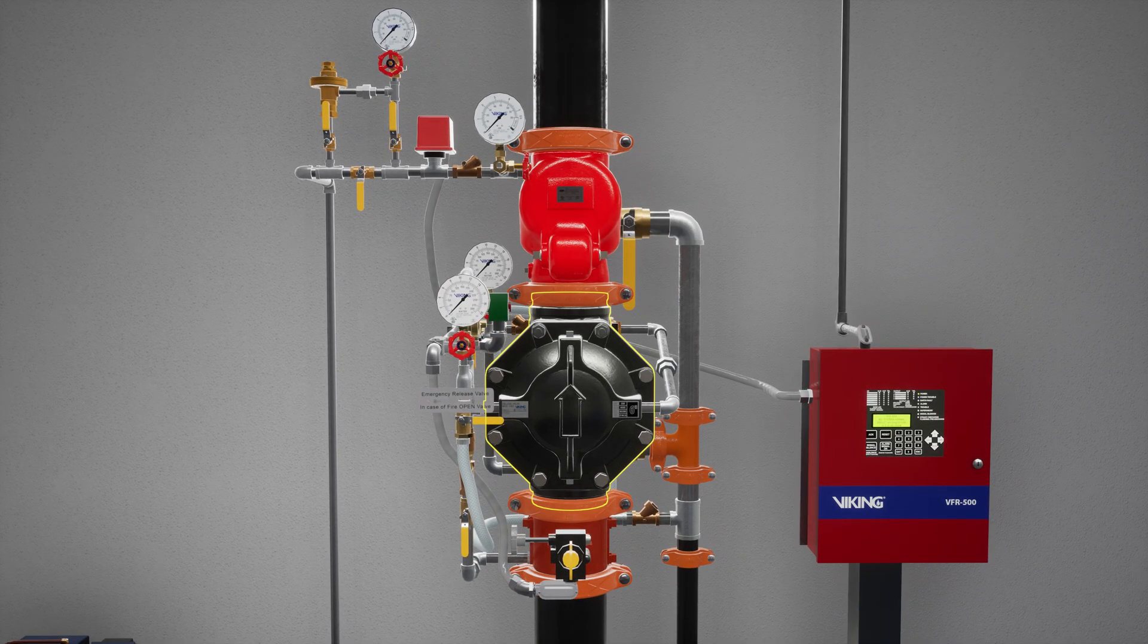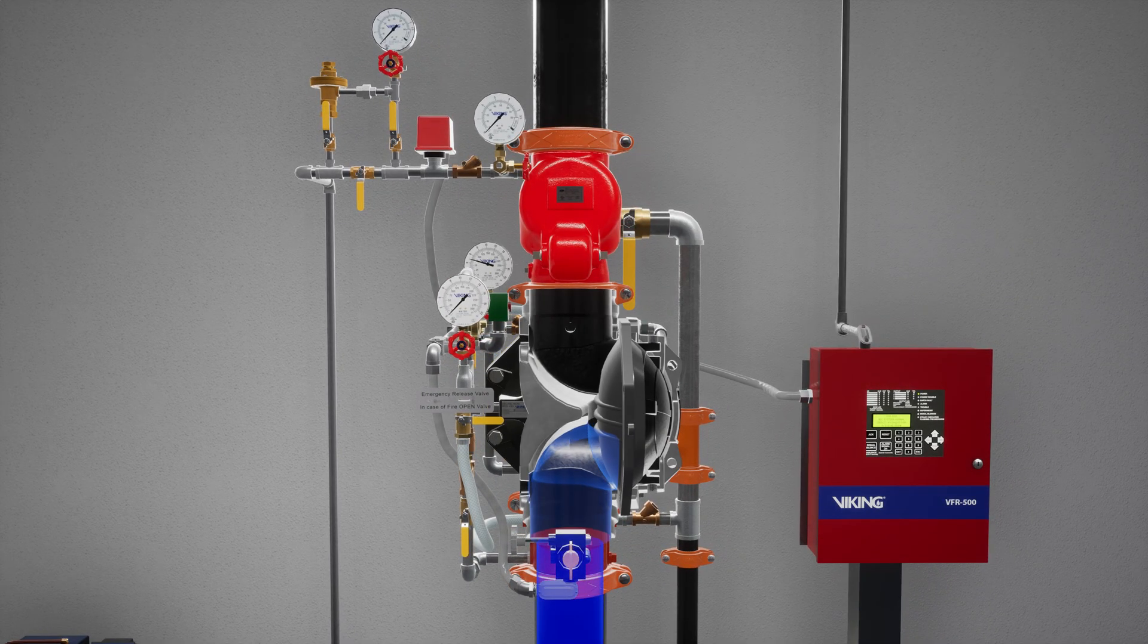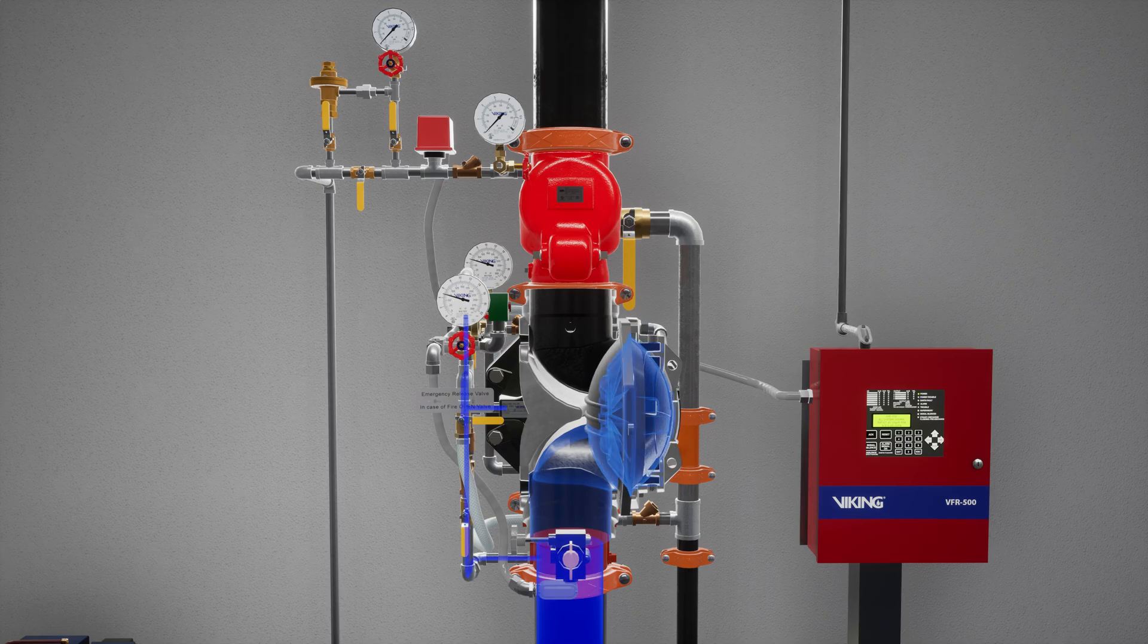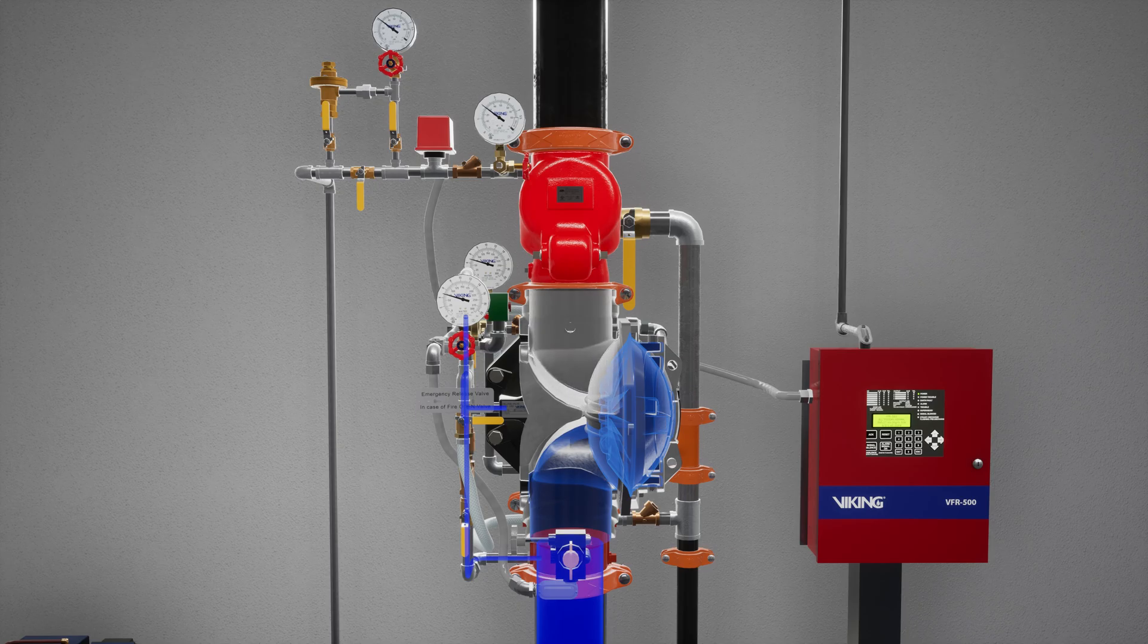The VXT Deluge Valve is a flood valve with only one moving mechanism. The valve is held closed by priming water pressure trapped in the priming chamber. This keeps the outlet chamber and system piping empty.